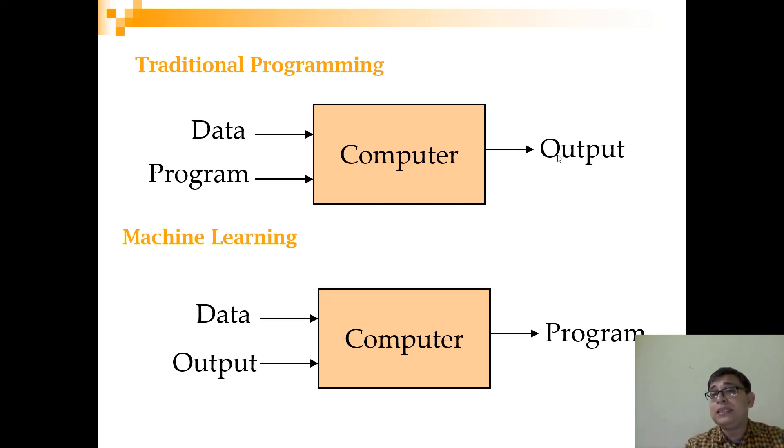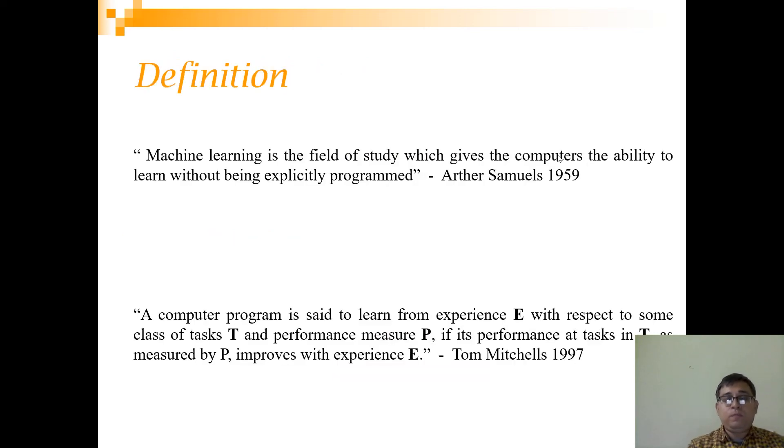The most important thing is that there is a fixed set of rules. Whereas in machine learning programs, you give data and output to the computer and it gives the program as the output. What does that mean? That means basically you are giving the emails and their labels—whether it is a spam or not a spam—and you get a program which has learned now to classify an email into a spam email or a normal email.